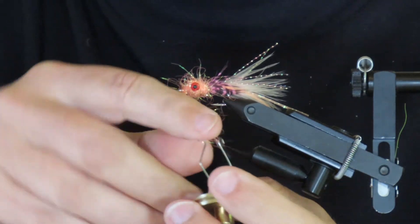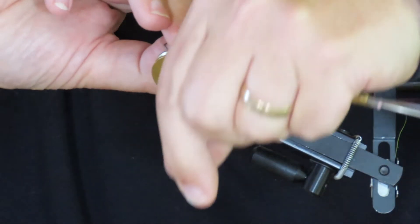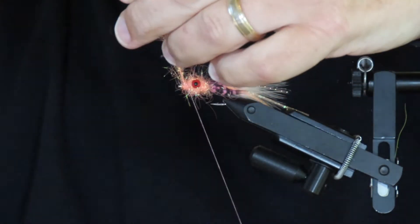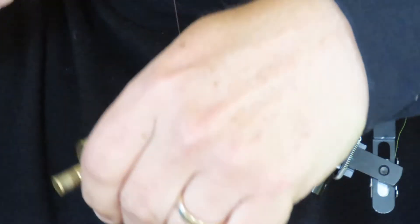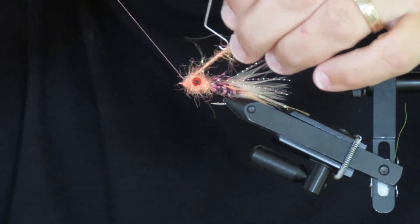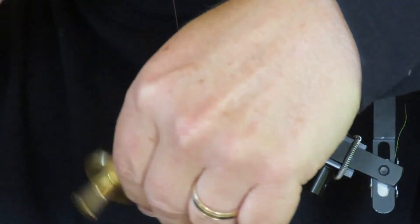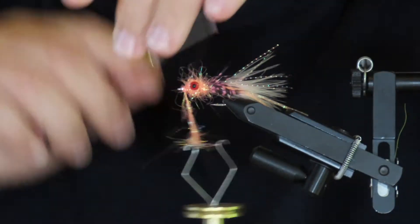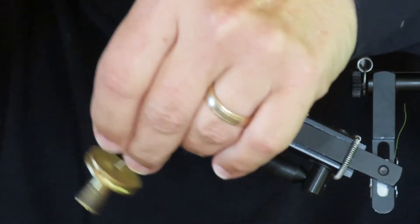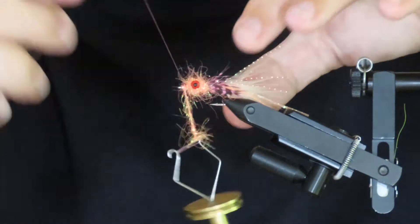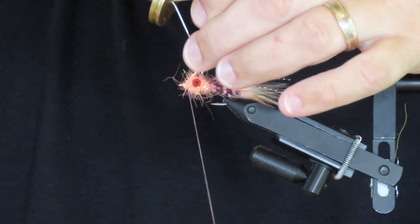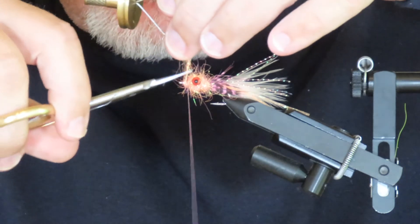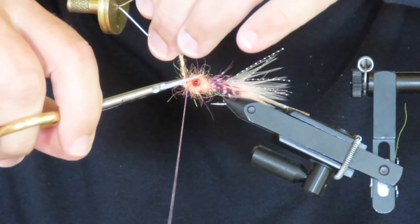Then trap the dubbing loop with my tying thread—take some tight wraps over there. That's it. You can snip off the excess, like so.